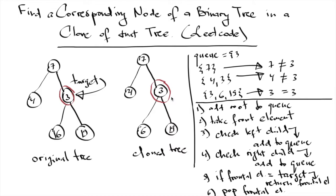Let's solve the LeetCode problem called 'Find the Corresponding Node of a Binary Tree in a Clone of That Tree.' We are given two trees — the original tree and the cloned tree — along with a target node from the original tree. We have to return the reference of a node from the cloned tree where the node value is equal to the target value.